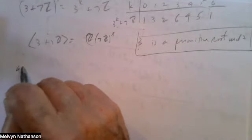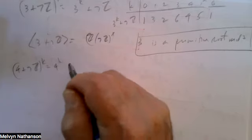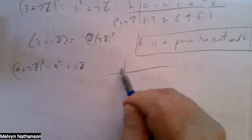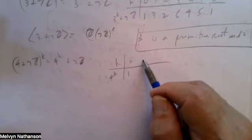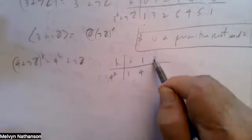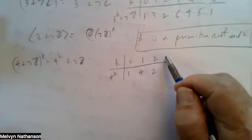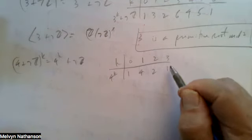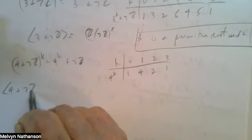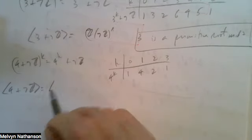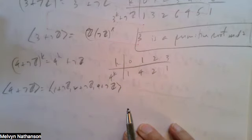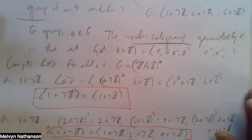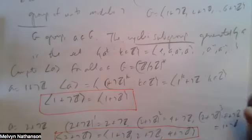What about 4+7Z? We have (4+7Z)^k = 4^k + 7Z. For different values of k: 4⁰=1, 4¹=4, 4²=16≡2 mod 7, 4³=64≡1 mod 7. So the cyclic subgroup generated by 4+7Z consists of the three congruence classes {1+7Z, 2+7Z, 4+7Z}. This is exactly the same subgroup as the one generated by 2+7Z — 2+7Z and 4+7Z generate the same cyclic subgroup.